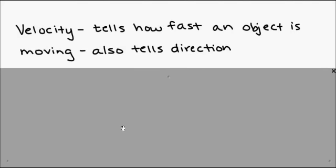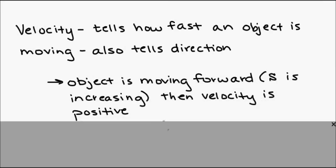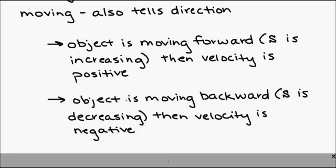Velocity tells you how fast an object is moving, but it also tells you the direction in which it is moving. You would have heard of this if you've taken a physics class before. Basically, if an object is moving forward, then velocity is positive. So when your position is increasing, velocity is positive. And when an object is moving backward or if it's falling, then your S is decreasing and your velocity will be negative. So negative doesn't mean that you're slowing down. It just changes the direction that you're moving in.